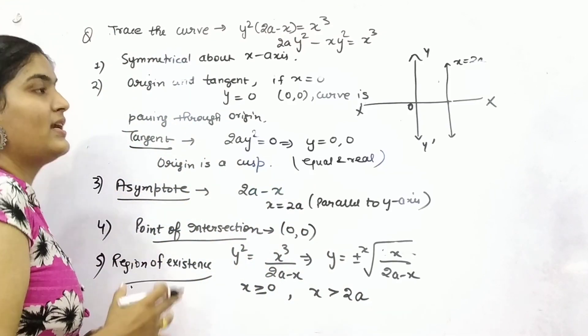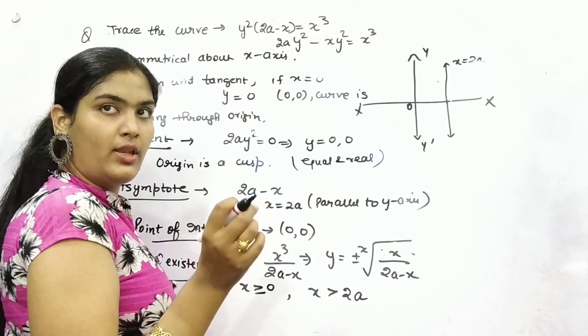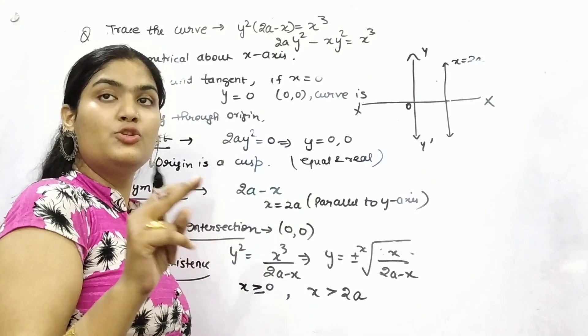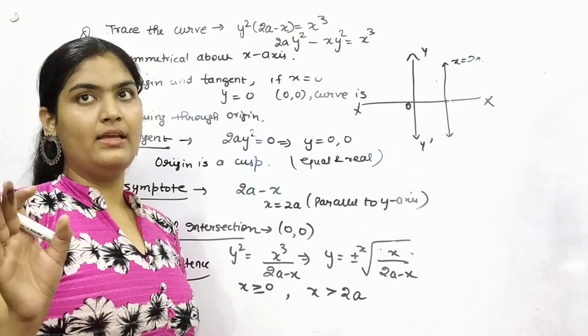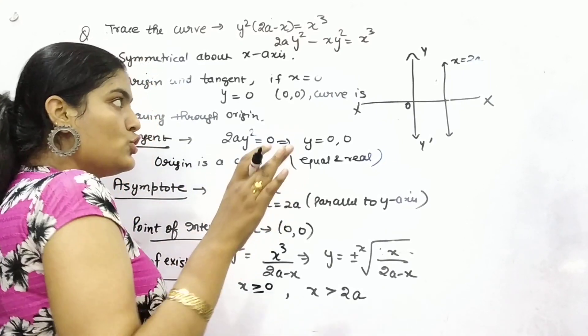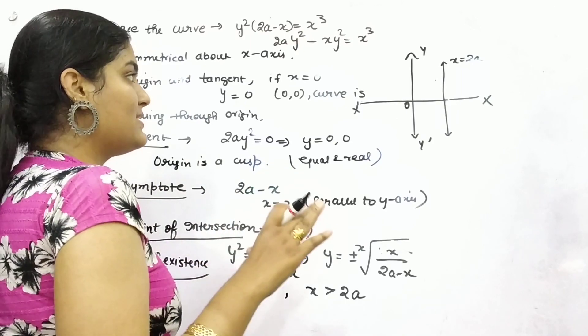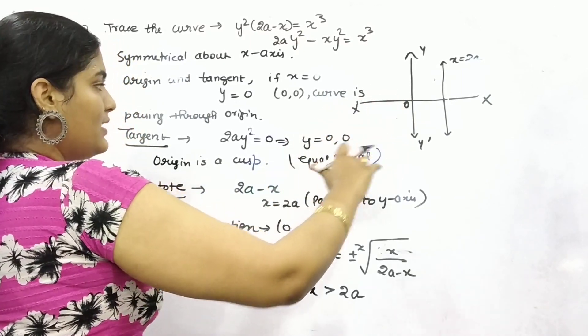And it is parallel to y-axis. So this is x = 2a. You know that curve and asymptote - asymptote cuts a curve at two points, but infinitely, at infinite point. So infinitely away, that point is infinitely away.